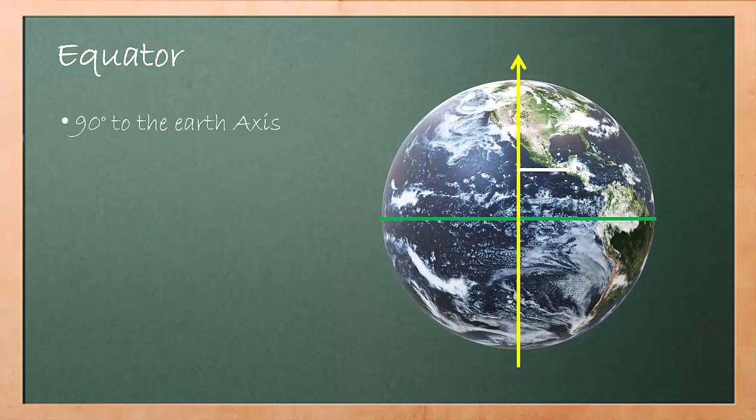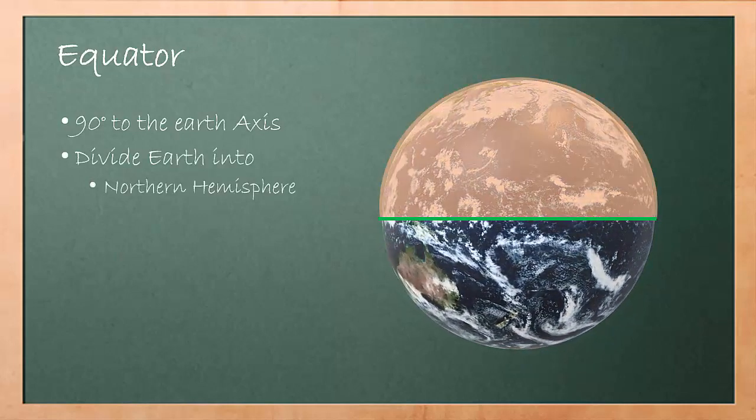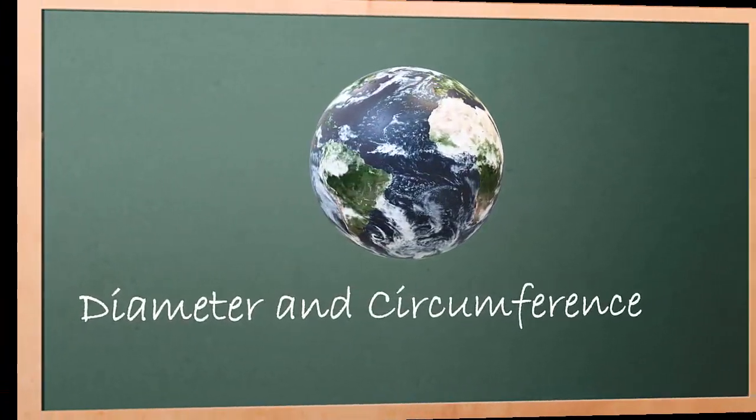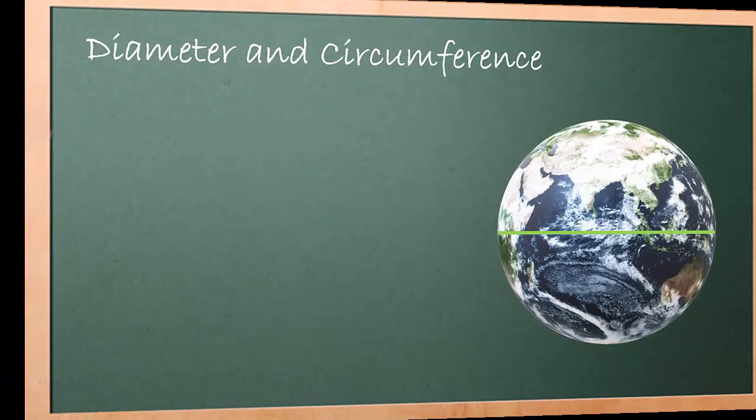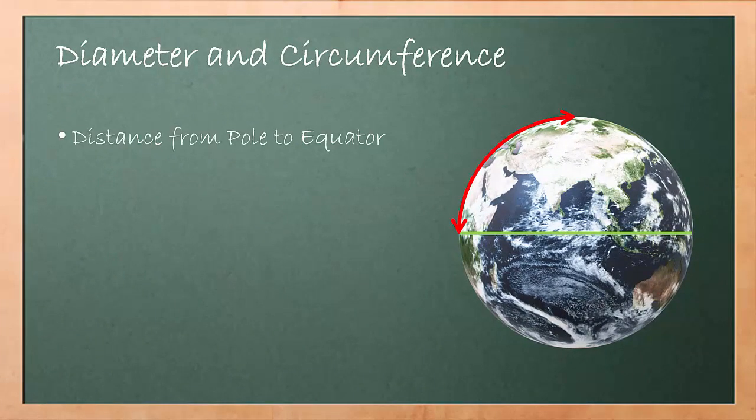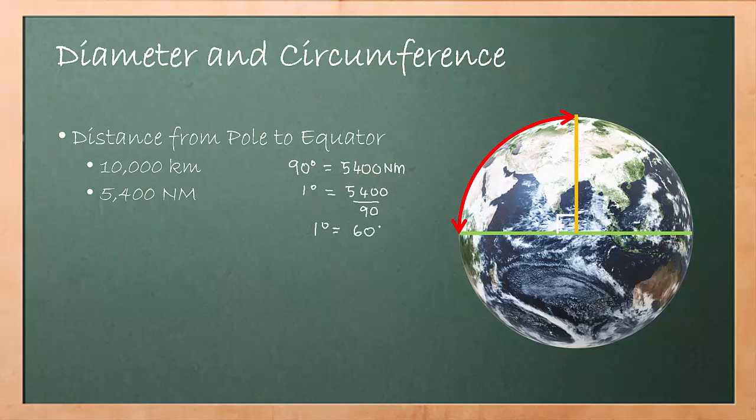Equator. If you look at the diagram, the angle between poles and equator is 90 degrees. 90 degrees change in latitude equals 5,400 nautical miles. 1 degree equals 5,400 over 90, which equals 60 nautical miles. We know that 1 degree equals 60 nautical miles. Thus, 1 minute equals 1 nautical mile.